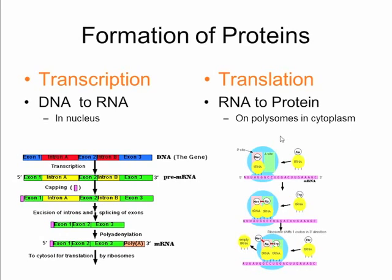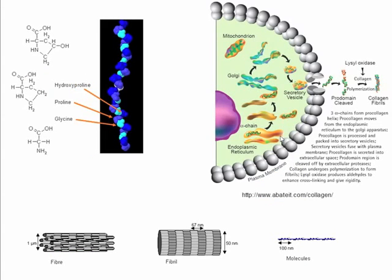Just to remind you about the formation of proteins: we've got transcription in the nucleus, where we're getting the DNA transcribed to a negative template, RNA. Then in the ribosomes, in the cytoplasm, we're getting the translation of the RNA to a protein. Once we've got that protein, we're going to be combining and altering parts of that in the Golgi apparatus, and then extracellularly there's going to be further modification of the protein. Collagen is a good example of that.